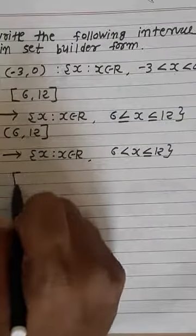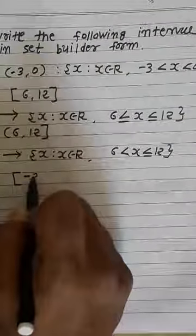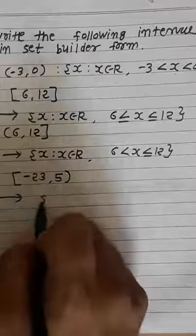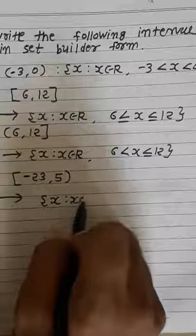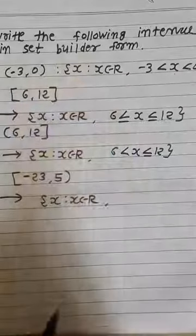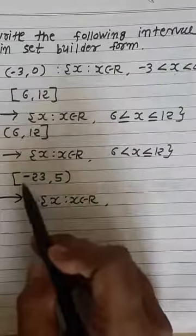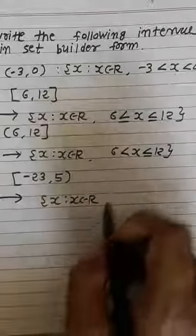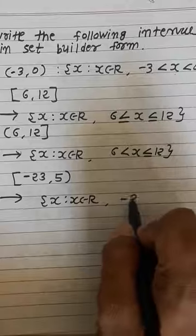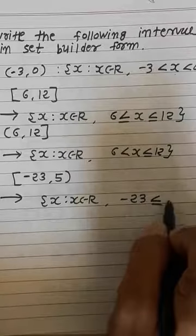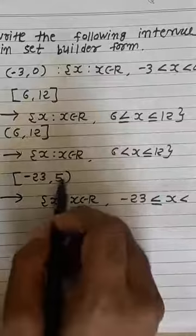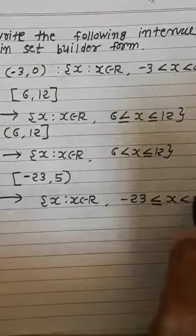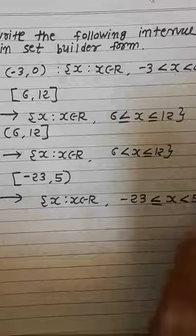Last question: closed-open interval [-23, 5). In set builder form: {X | X belongs to R, -23 ≤ X < 5}. Since -23 is in closed bracket, we write -23 ≤ X. Since 5 is in small bracket (open form), we write strictly less than 5.